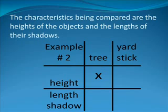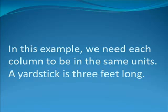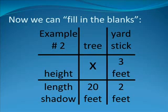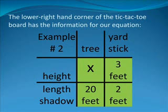The characteristics being compared are the height of the objects and the lengths of their shadows. Thus, we fill in the box as follows. In this example, we need each column to be in the same units. A yardstick is 3 feet long, by definition. Now we can fill in the blanks.